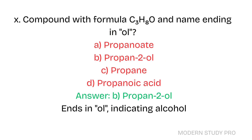Question 10: Which compound has the formula C3H8O and a name ending in -ol? A. Propanoate. B. Propan-2-ol. C. Propane. D. Propanoic acid. Answer: B. Propan-2-ol. It ends in -ol, indicating it is an alcohol.